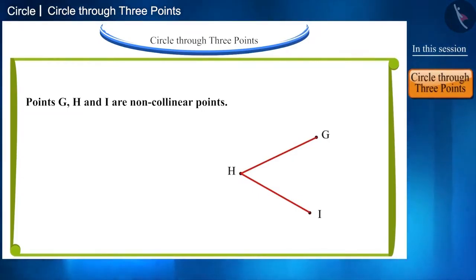These perpendicular bisectors intersect each other at point O. We know that each point of the perpendicular bisector of a line segment is equidistant from its endpoints.